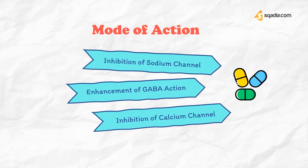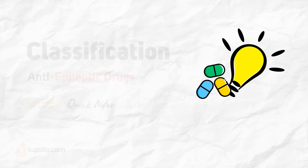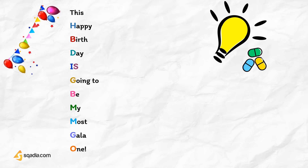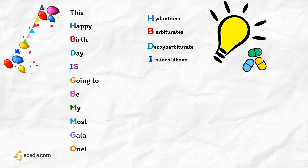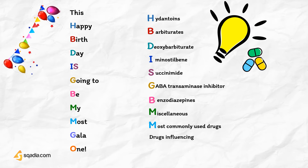Now let's move ahead and see the classification of anti-epileptic drugs and their molecular targets as well as adverse effects. Anti-epileptic drugs can be memorized by an easy mnemonic: 'This happy birthday is going to be my most gala one.' H for hydantoins, B for barbiturates, D for deoxybarbiturates, I for iminostilbene, S for succinimides, G for GABA transaminase inhibitor, B for benzodiazepines, M for miscellaneous, M for most commonly used drugs, G for drugs influencing GABA, O for others.